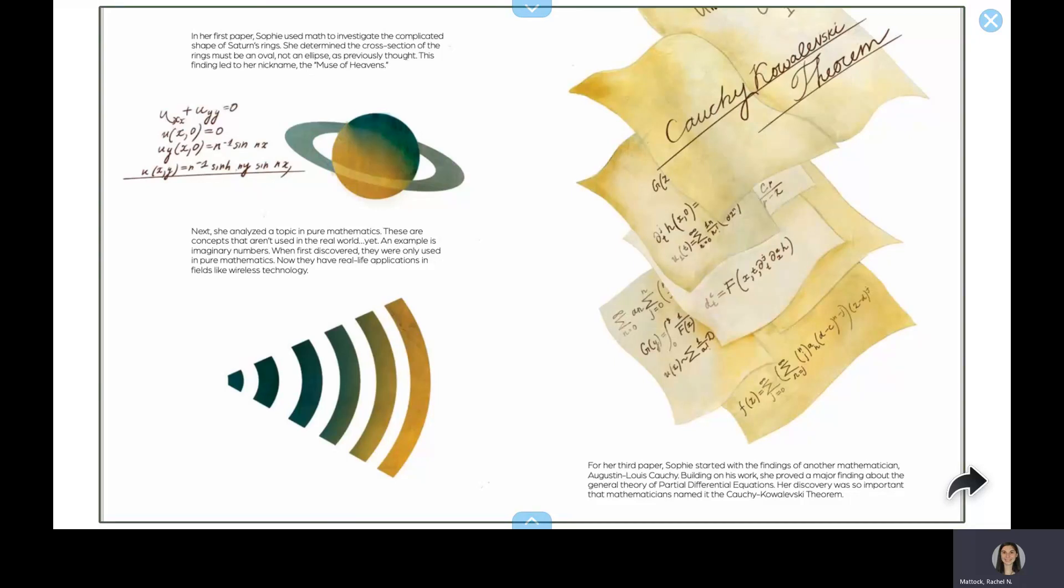In her third paper, Sophie started with the findings of another mathematician, Augustin Louis Cauchy. Building on his work, she proved a major finding about the general theory of partial differential equations. Her discovery was so important that mathematicians named it the Cauchy-Kowalewski theorem.